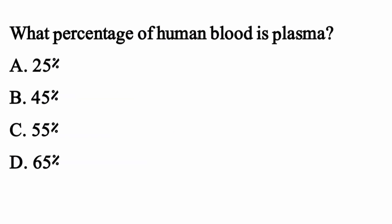What percentage of human blood is plasma? The right option is option C: 55%.